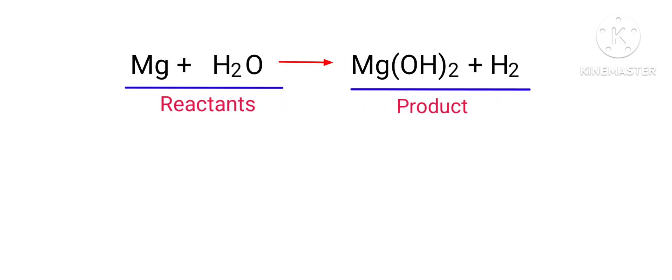In this equation, the reactants are magnesium and water and the products are magnesium hydroxide and hydrogen.